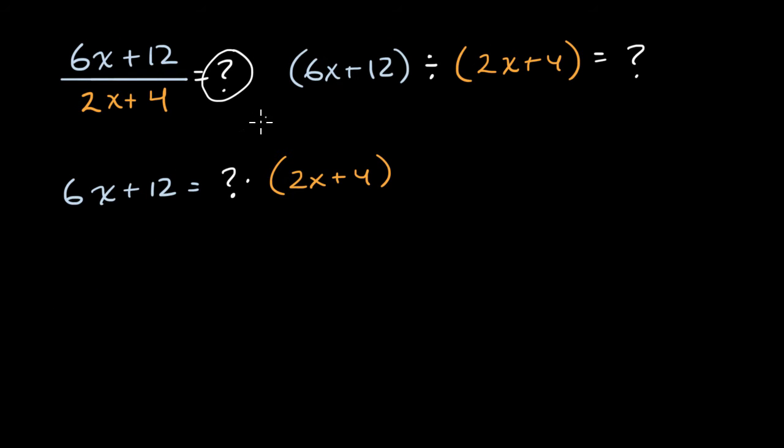Well, here you might say, to go from 2x to 6x, I would have to multiply by three. That's multiplying by three. And then to go from four to 12, I'm also multiplying by three. So if my question mark is three, it feels like it's going to work.